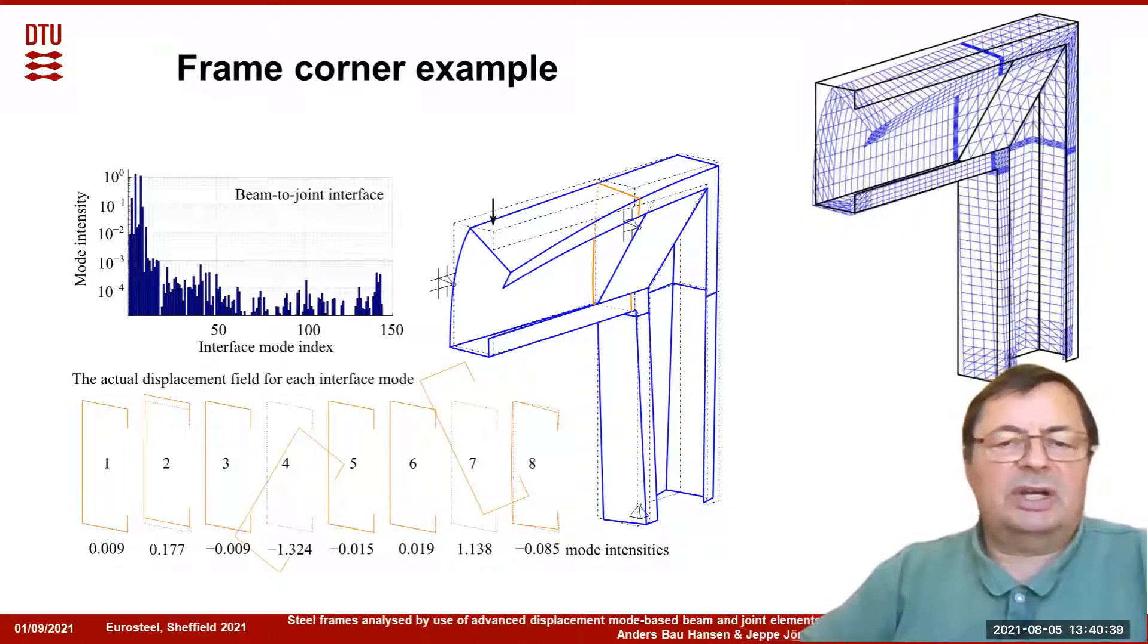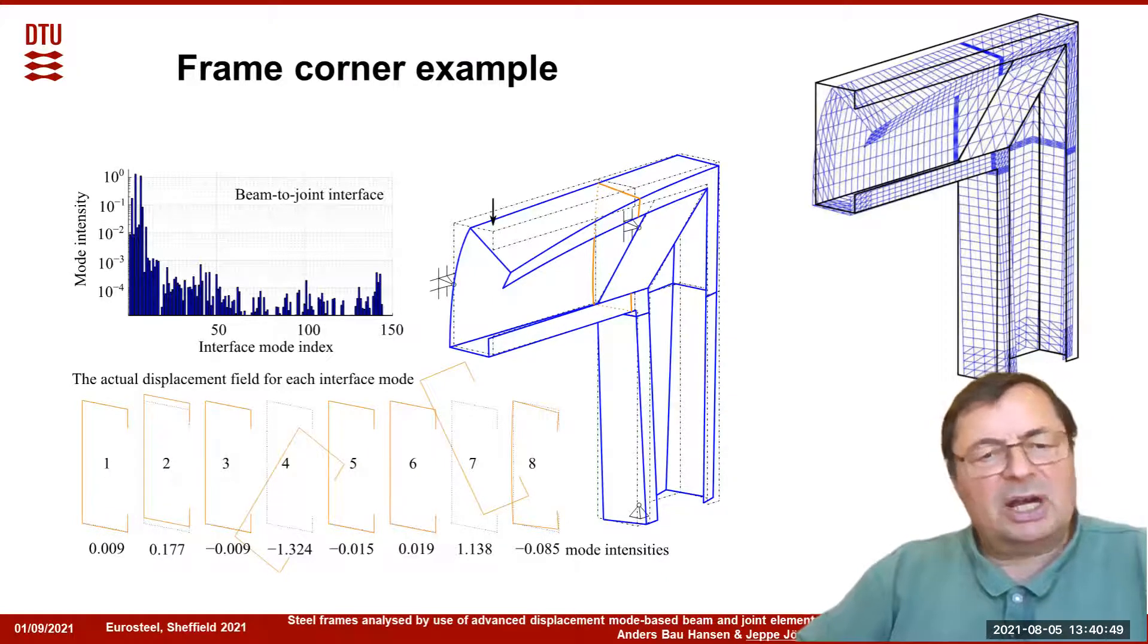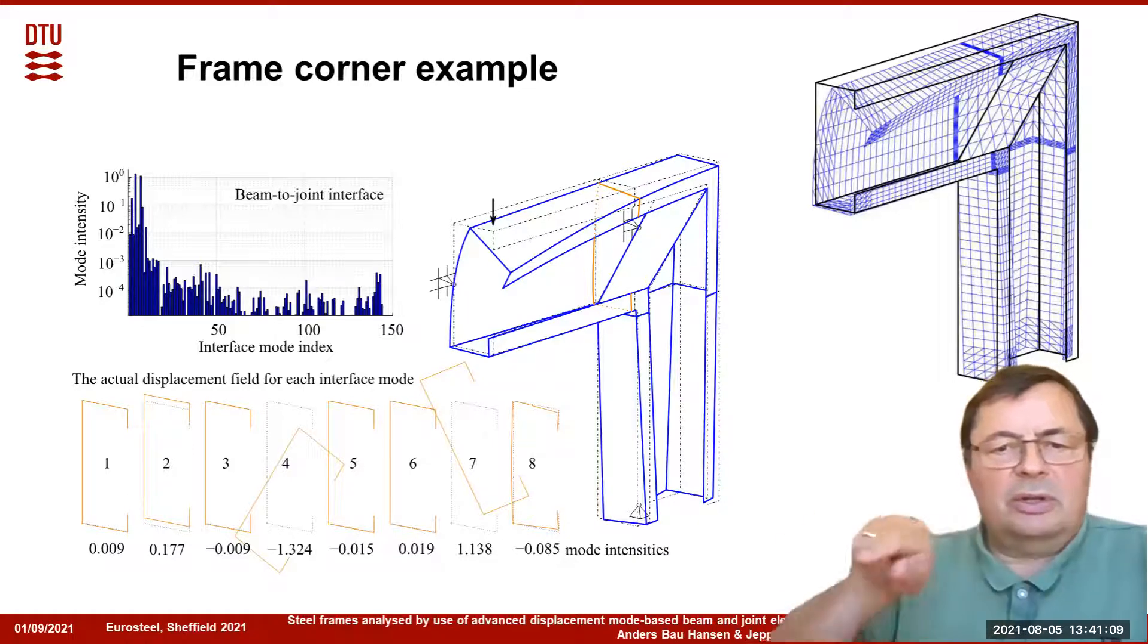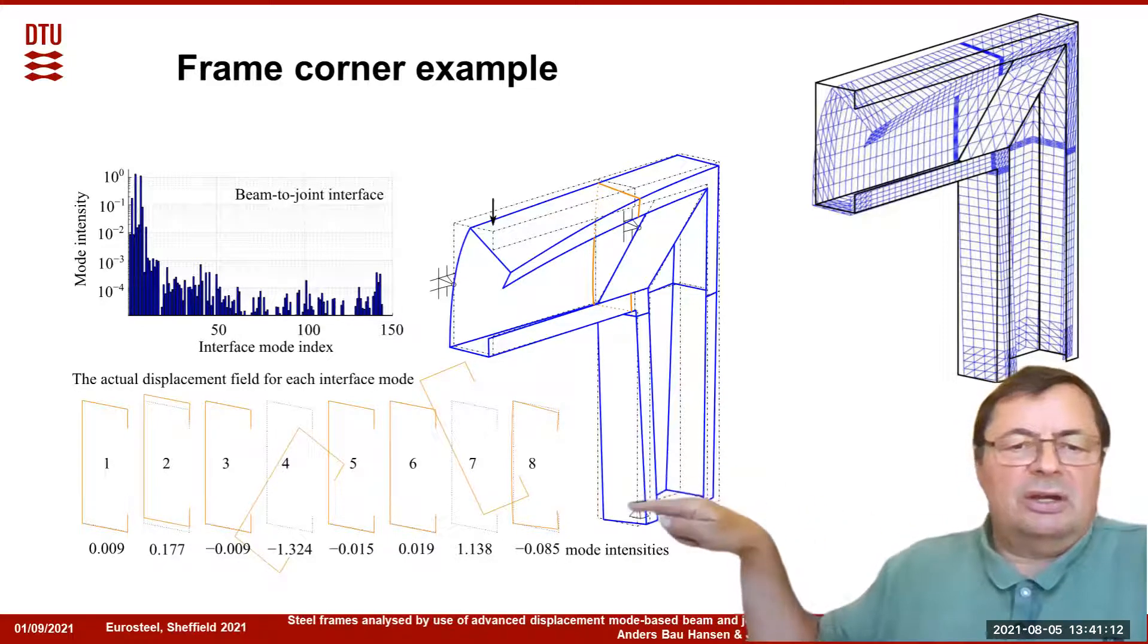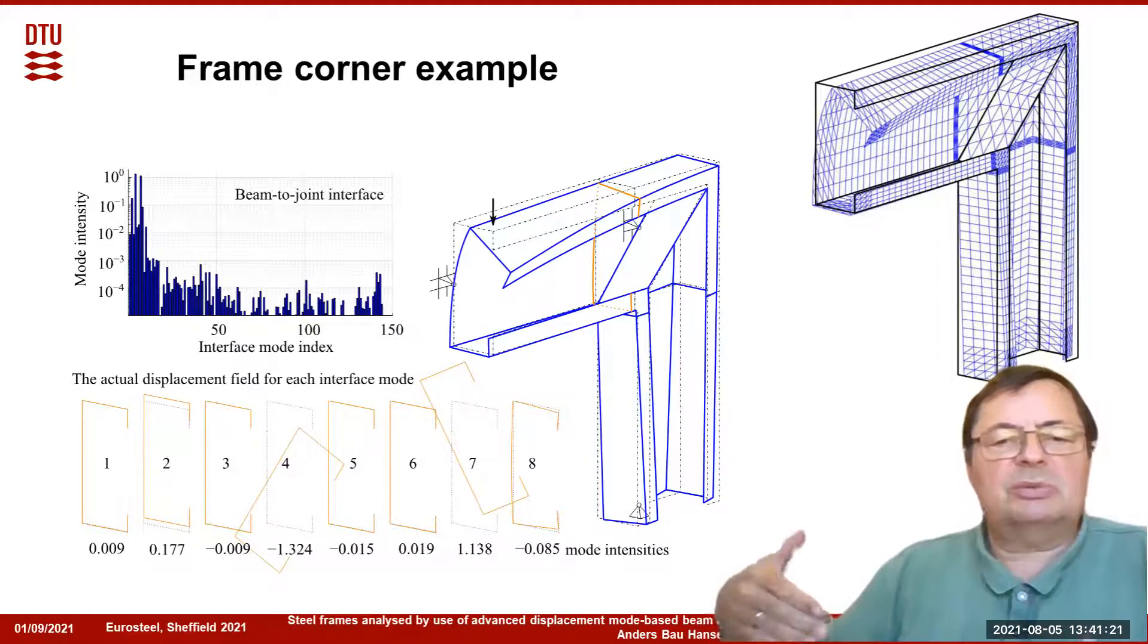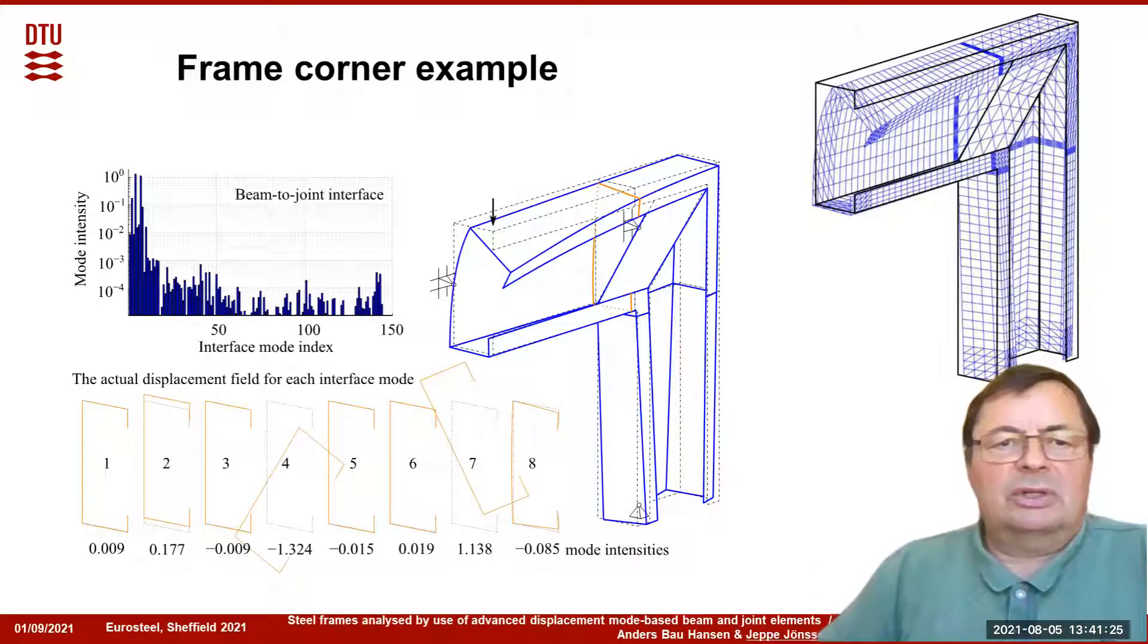Doing the calculation, we can find the mode intensity, or the values of the degrees of freedom, which are the modal degrees of freedom. We can take out the ones from the interface, the first upper interface between the corner and the upper beam, and draw the values or intensities of these. We can see that the first modes have a large influence, and the next modes are reduced. At the lowest line here, we can see the displacement modes: the first one, two, and three are the translational degrees of freedom, we have rotation, we have warping, and we have distortion also.